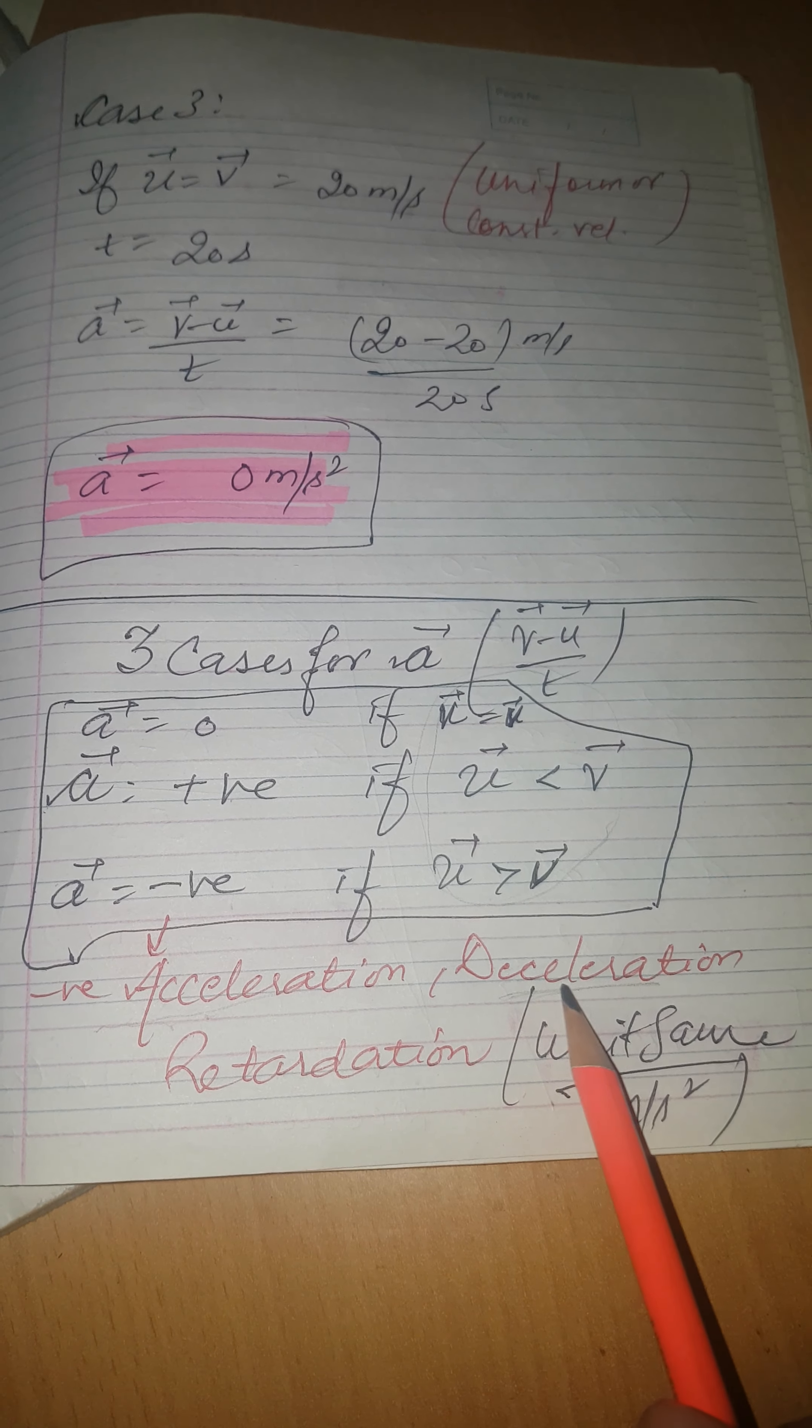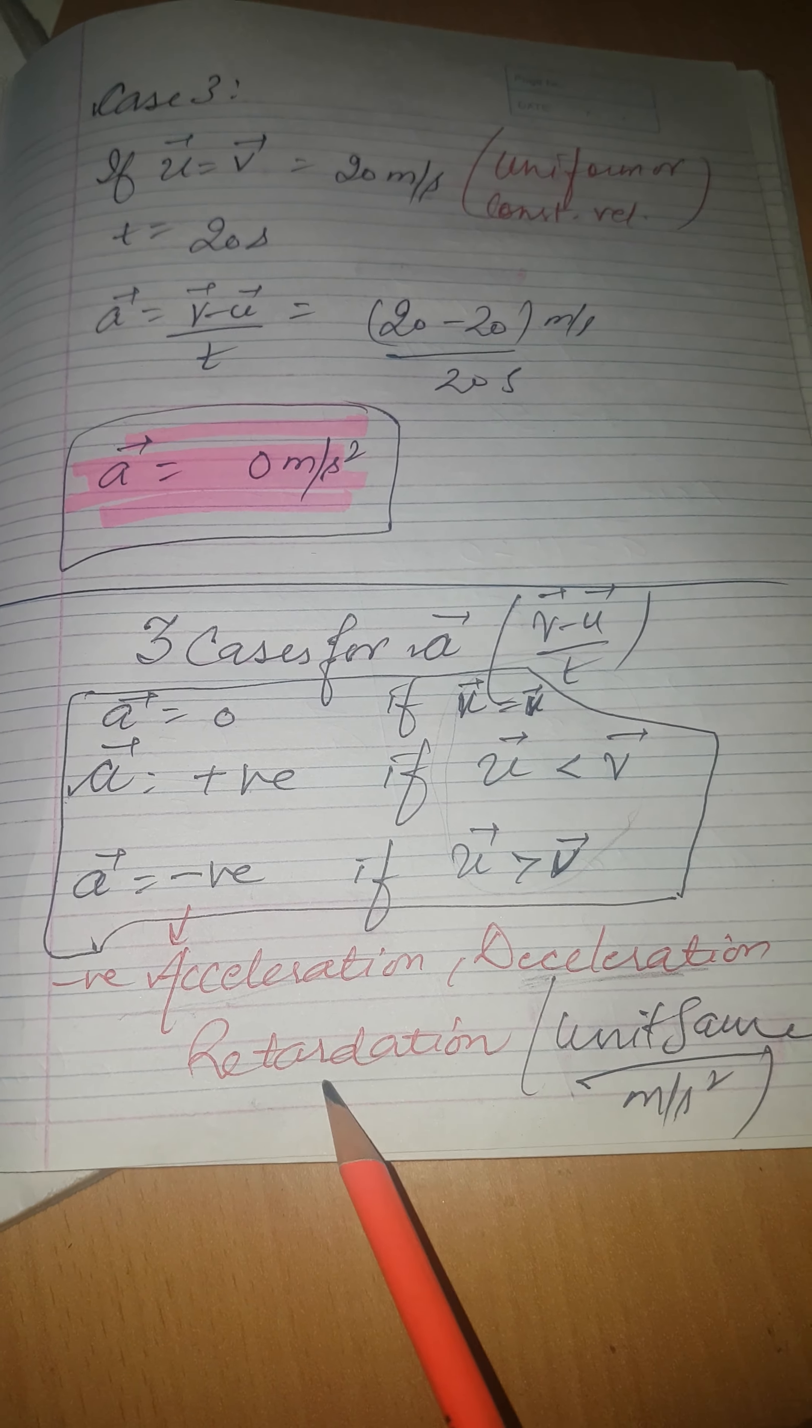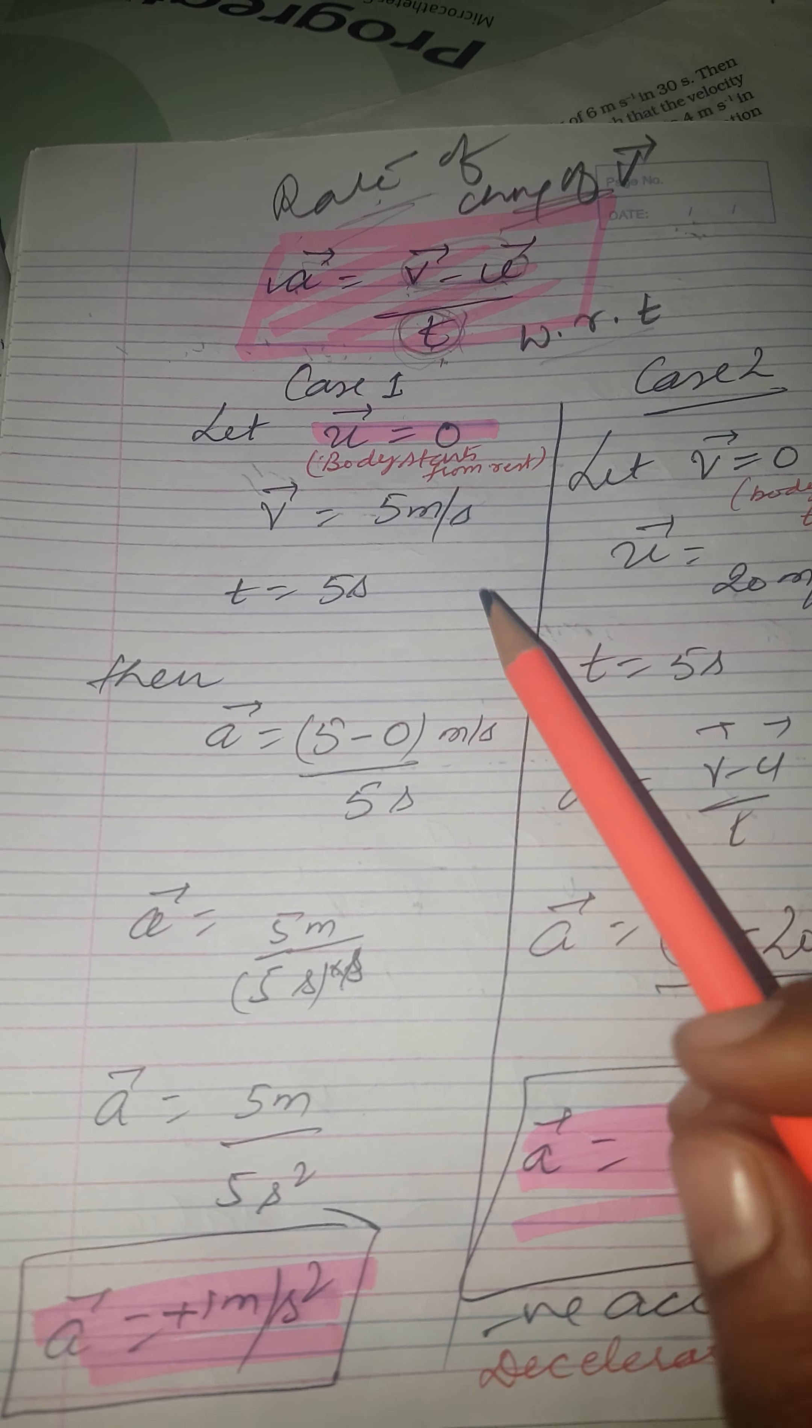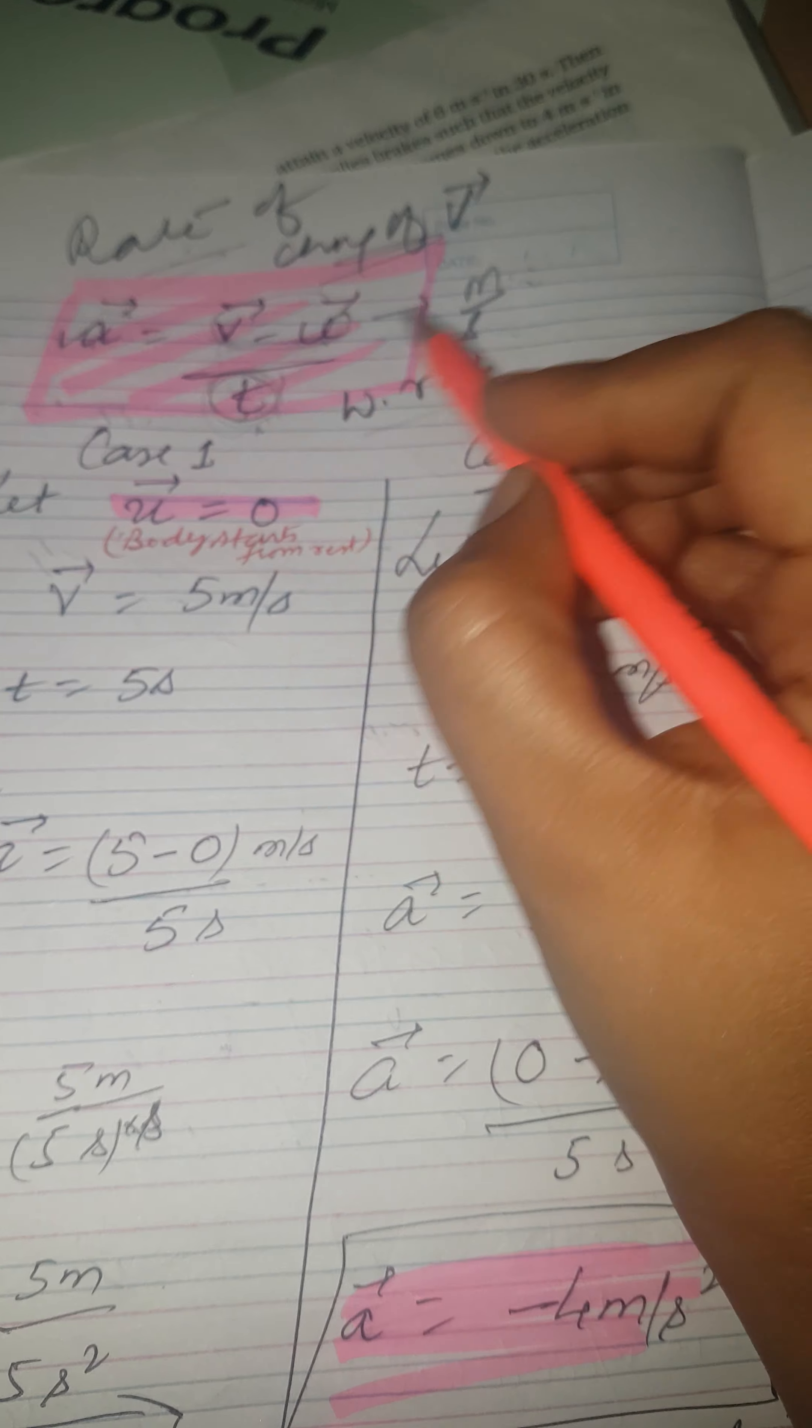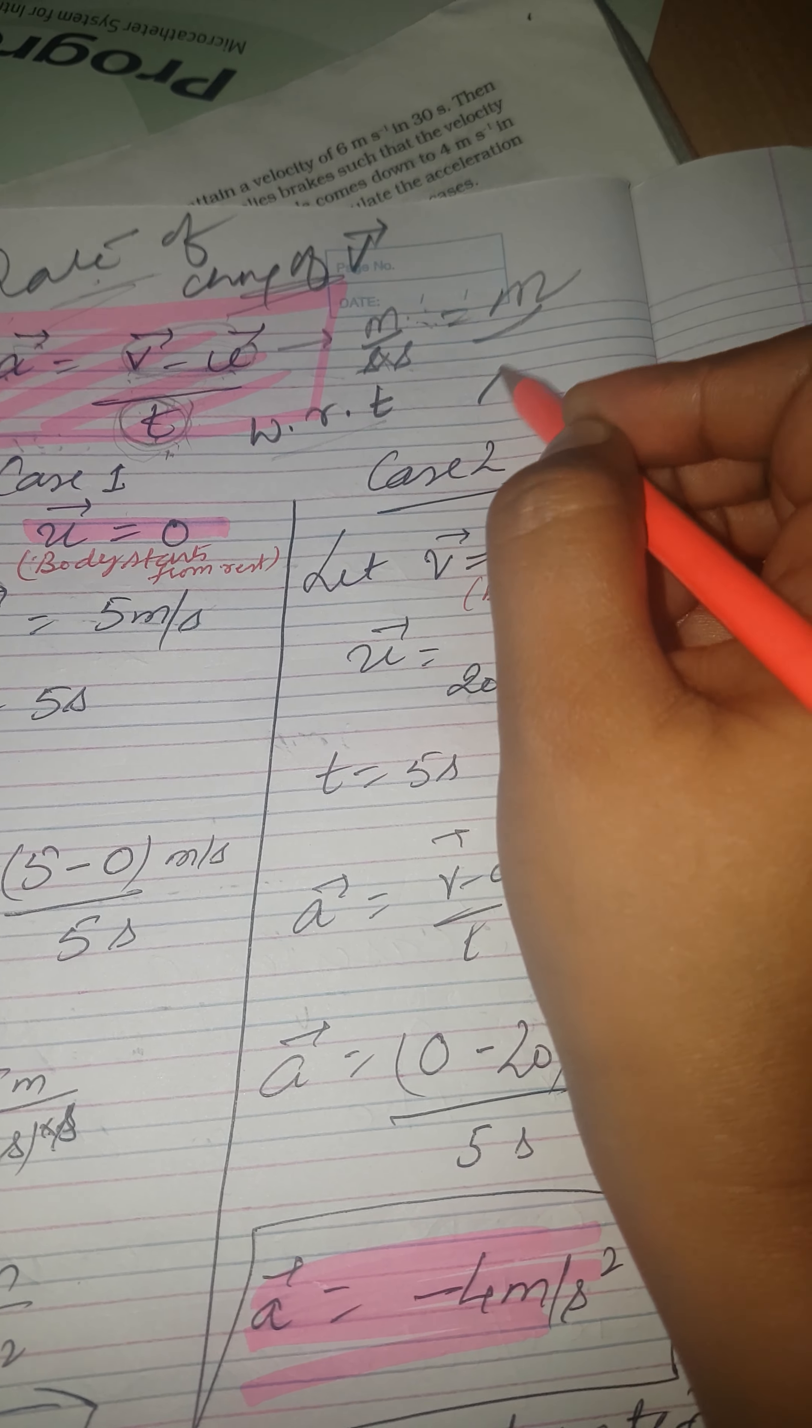Now come to unit of acceleration. Since it depends on velocity and time, and unit of velocity is meter per second and unit of time is second, so unit of acceleration will be meter per second square.